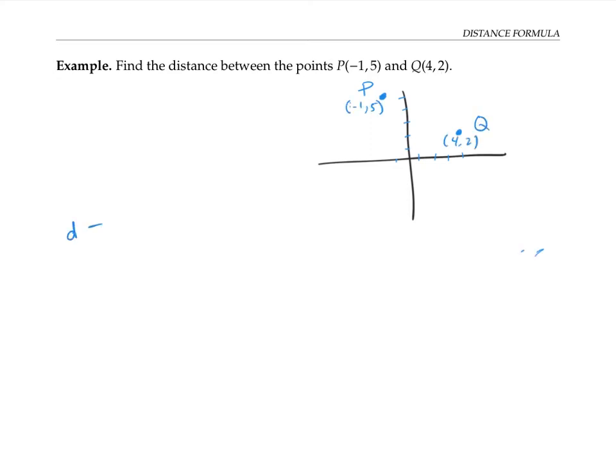We have the distance formula. Let's think of P being the point with coordinates x1, y1, and Q being the point with coordinates x2, y2. But as we'll see, it really doesn't matter which one is which.